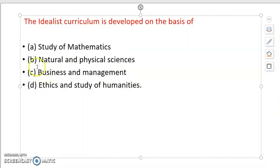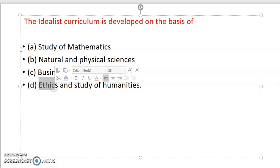So the first question is: The idealist curriculum is developed on the basis of study of mathematics, natural and physical science, business and management, ethics and study of humanities. So first, you will answer the question yourself. Then when you answer, you will match this answer. Then you will see out of 22, how much has happened. Okay?